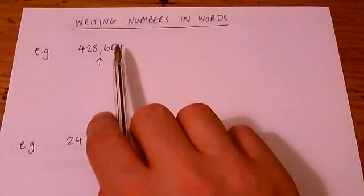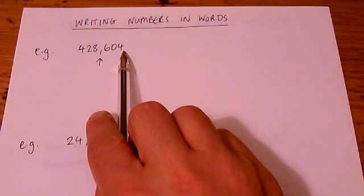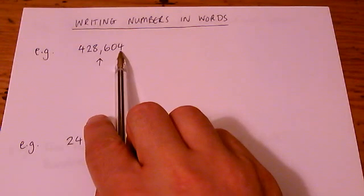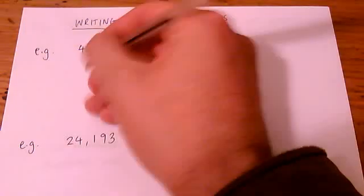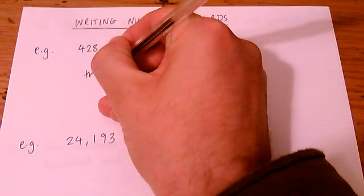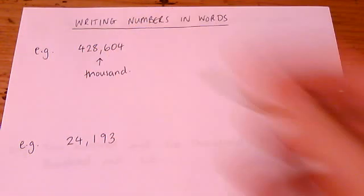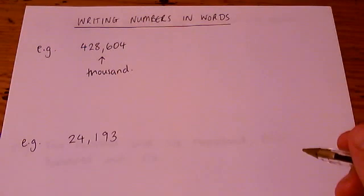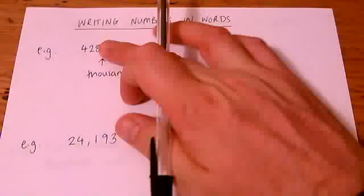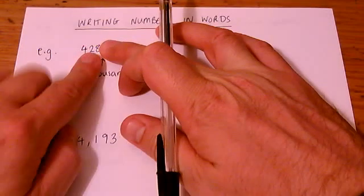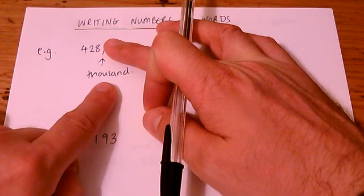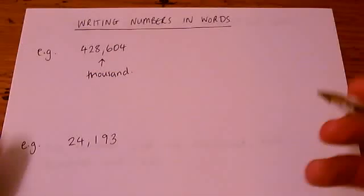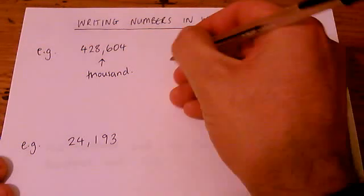So let's have a look at how this works. The first rule I think you should probably know is that if you work backwards from the end of the number, the first comma that you come to stands for thousand. So what we are going to write is this first bit, 428. Then we're going to write the word thousand, and then we're going to write this second bit, 604.